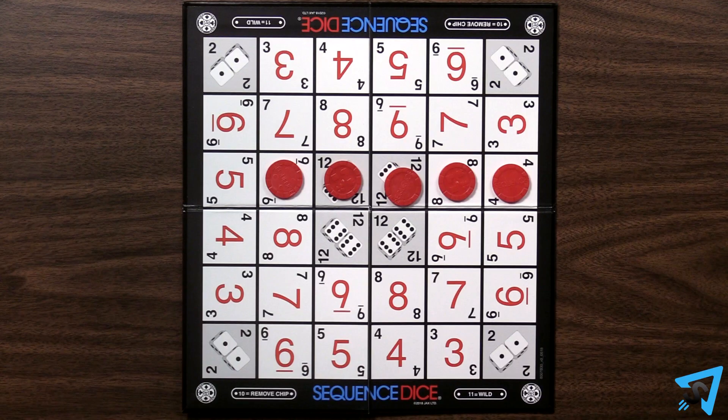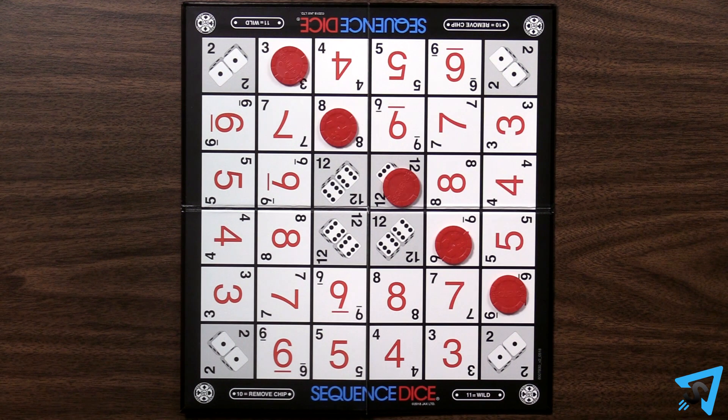Sequence Dice - How to Play. The object of the game is to be the first player or team to make a sequence of five chips horizontally, vertically, or diagonally.